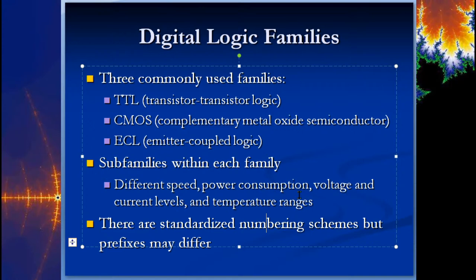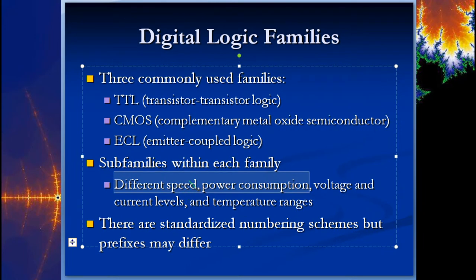The holy grail is getting high speed while using less power. There's essentially a triangle: one side is speed, one side is power, and the other side is money. If you want faster speed you have to pay for it; if you want less power consumption you have to pay for it; and if you want both, you really have to pay. You don't get something for nothing.